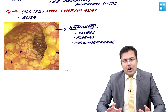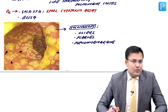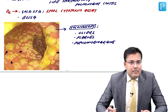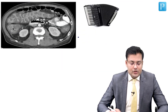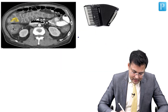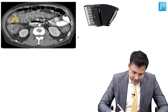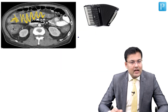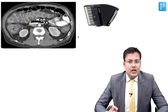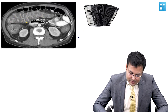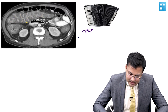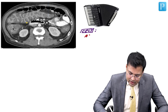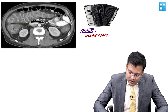On CT, there is a typical sign known as the accordion sign — frequently asked as an image-based question. You can see edema and pseudomembrane giving the appearance of an accordion. This accordion sign is characteristic of pseudomembranous colitis on CT.